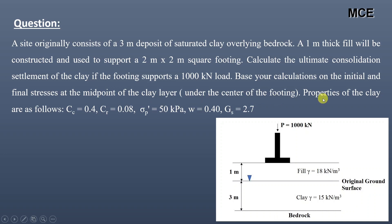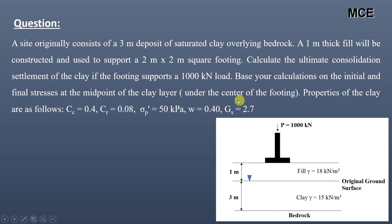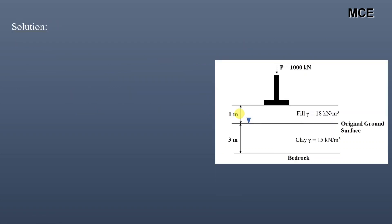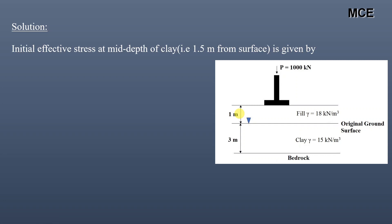The properties of the clay layer are as follows: compression index Cc is equal to 0.4, recompression index Cr is equal to 0.08, pre-consolidation pressure is equal to 50 kilopascal, water content is equal to 0.4, and specific gravity of solids is equal to 2.7. First, we will find the initial effective stress at the mid-depth of the clay, which is 1.5 meters from the original ground surface.